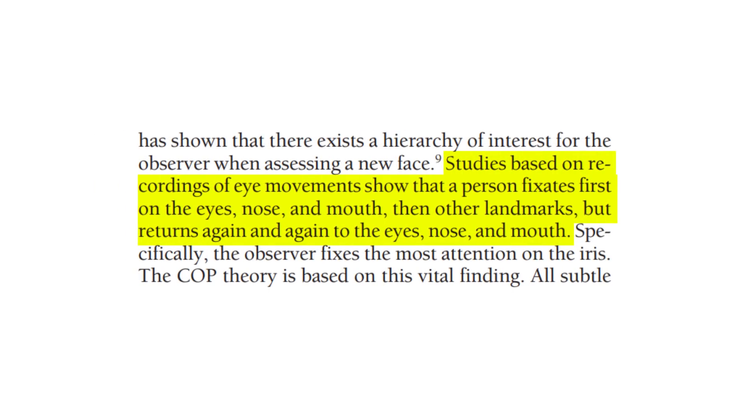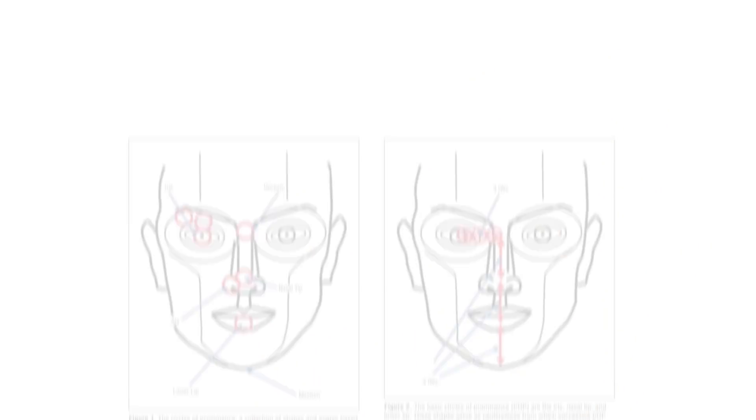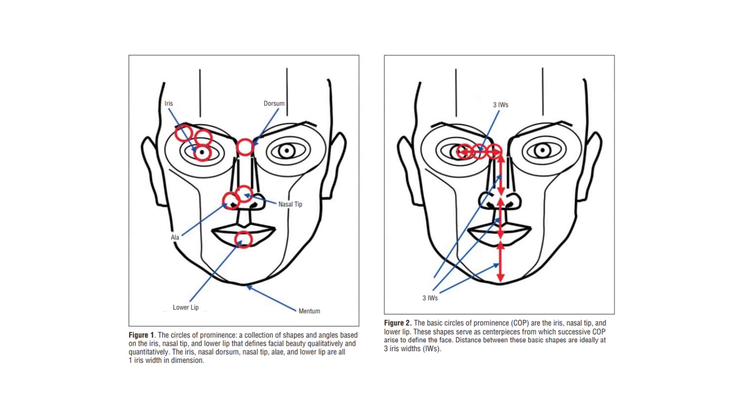Studies on eye movement have recorded in specific that we focus on the eyes, nose and mouth, then other landmarks, but return back to these features. In the past we've also discussed the central face theory, where features towards the center of the face get more attention and thus are more sensitive for attraction than those laterally outwards. If we combine these two ideas, the circle of prominence theory suggests that the ideal proportion of a particular face is determined by iris width because we focus on the iris so much and everything else is reduced to peripheral vision.